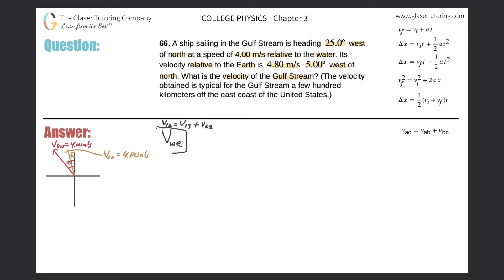To find the velocity of the water relative to the earth, I set up the equation so that the resultant vector is what I want. The third object in the problem is the ship, so the equation becomes: velocity of the water relative to the ship, plus the velocity of the ship relative to the earth equals the velocity of the water relative to the earth.